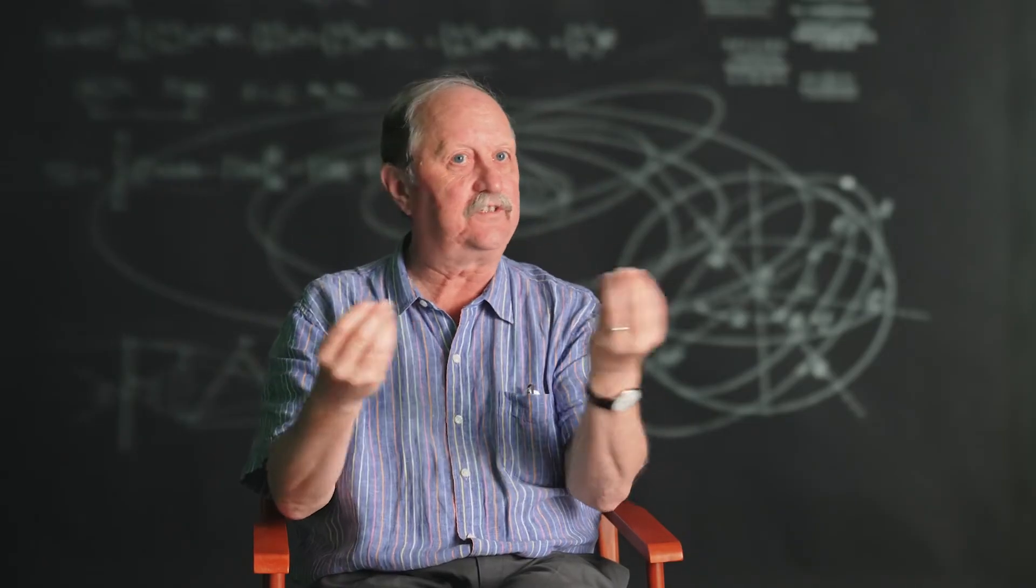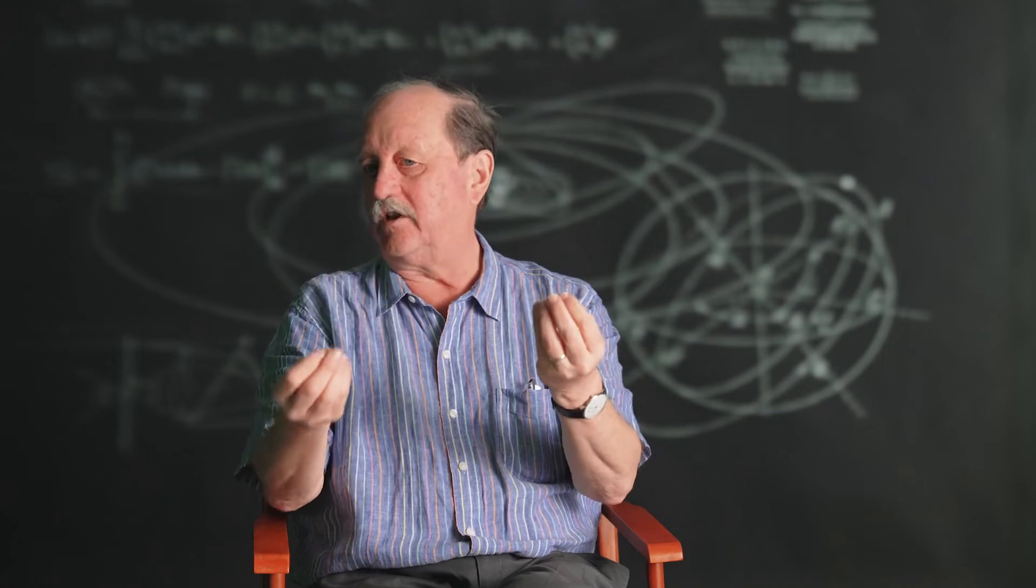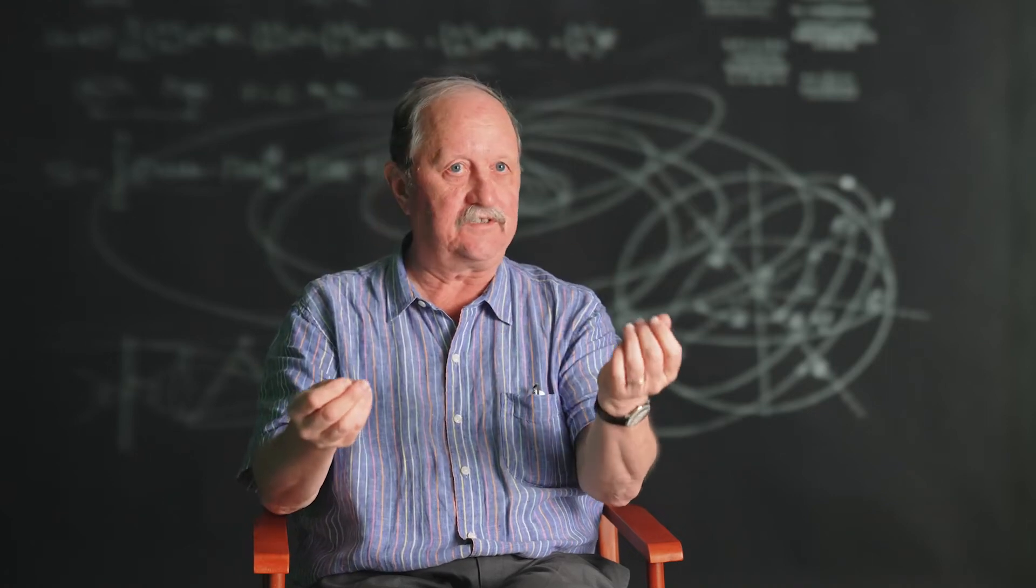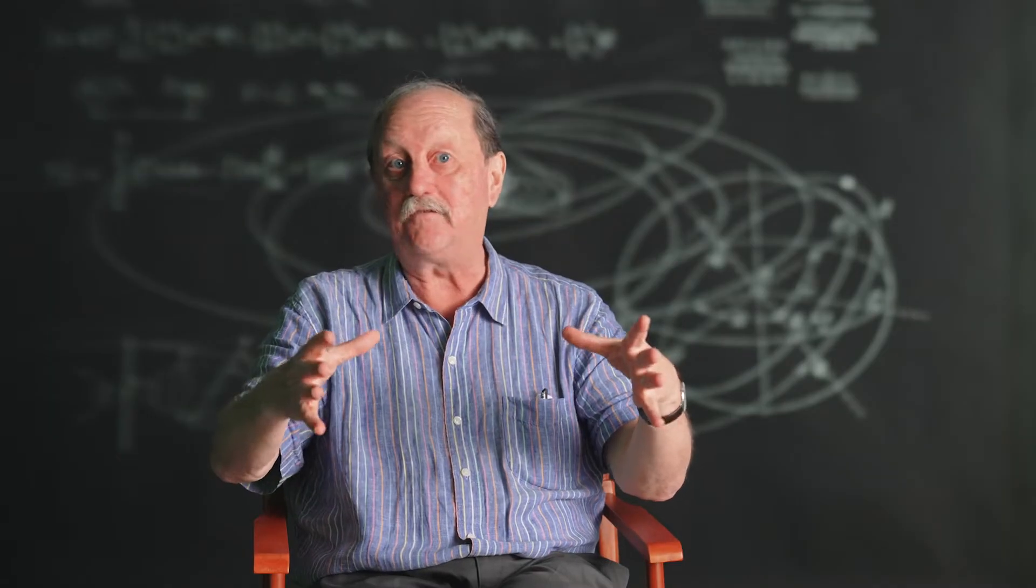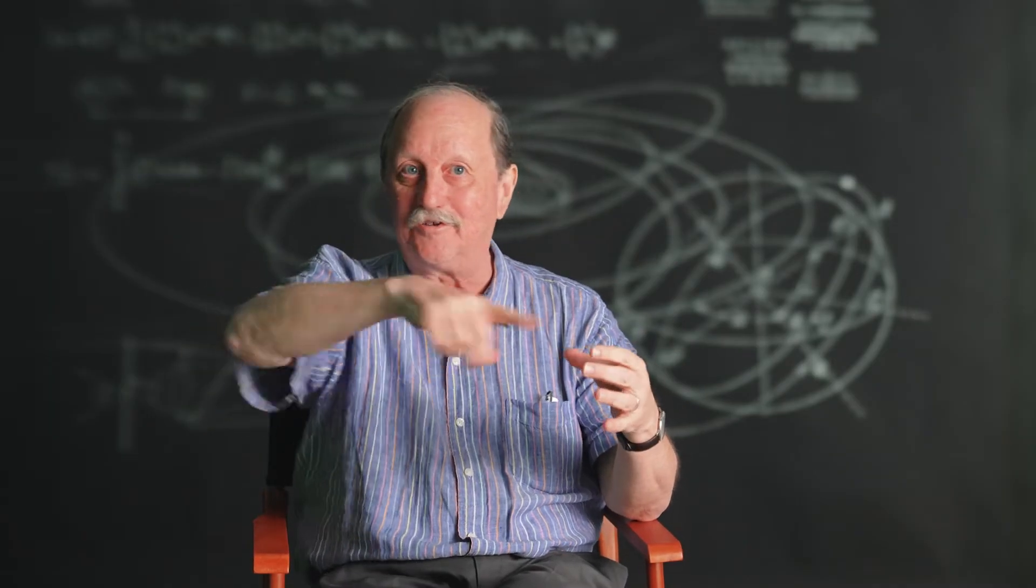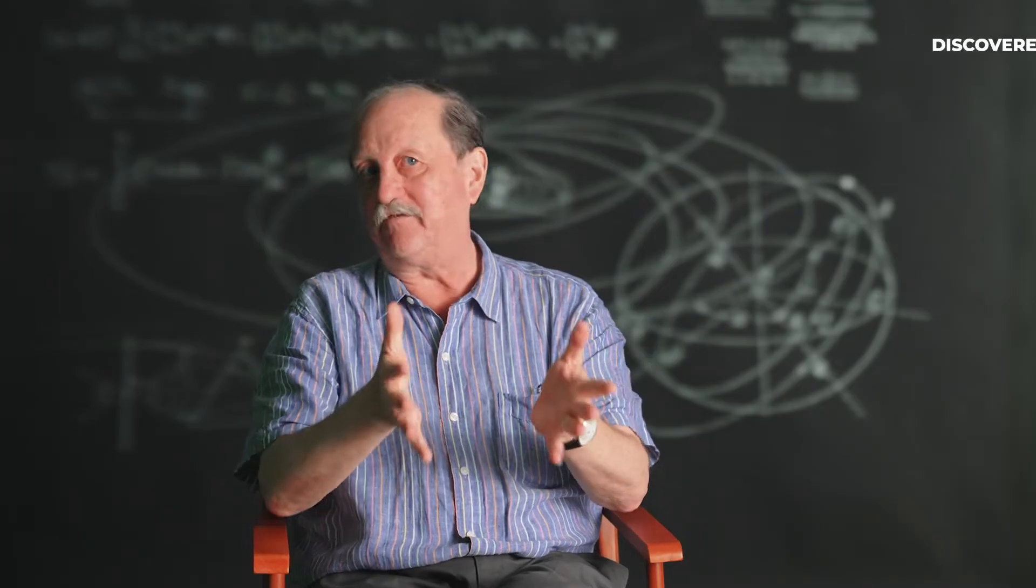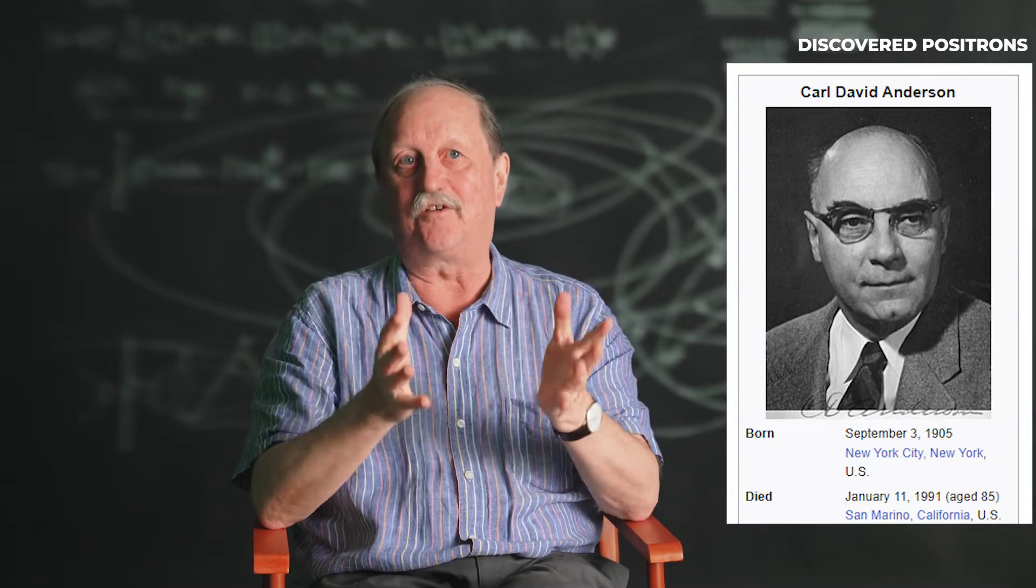They're not identical. You can tell them apart. So the electron has a negative charge. A positron has a positive charge. And so if you put them, for example, into a magnetic field, one goes around one way and one goes the other way. And so we can distinguish them. That's, in fact, how positrons were first discovered.